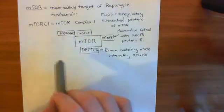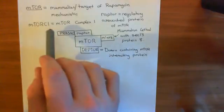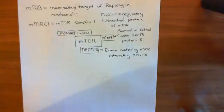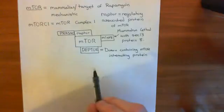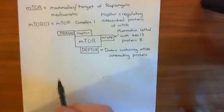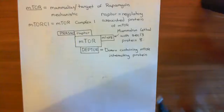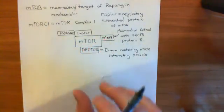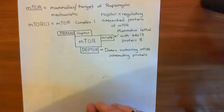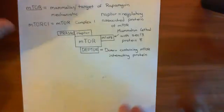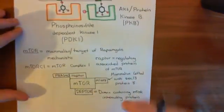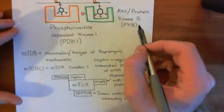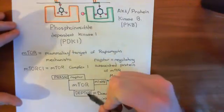This mTOR complex 1, or mTORC1, is going to carry out the function of actually activating the division of the cell. It's what's going to take the cell from being in interphase of the cell cycle to being in G1 phase of the cell cycle. So somehow, we need to get this protein AKT, or protein kinase B, to activate mTOR.